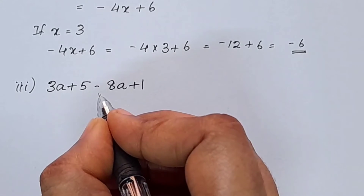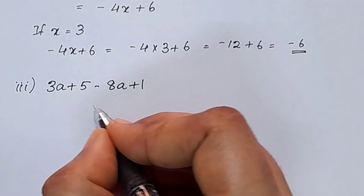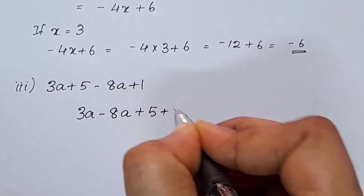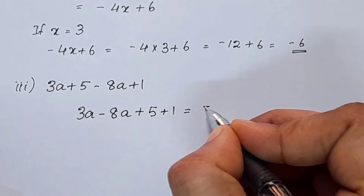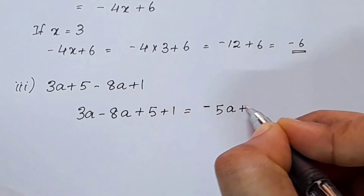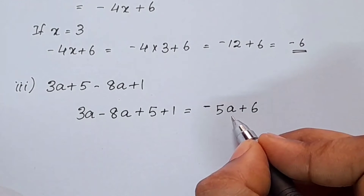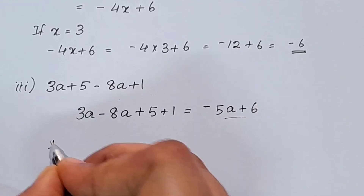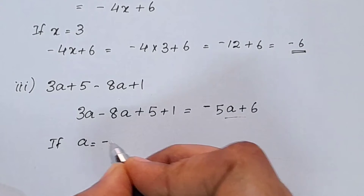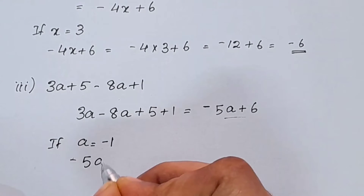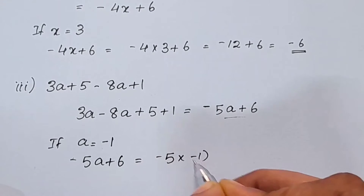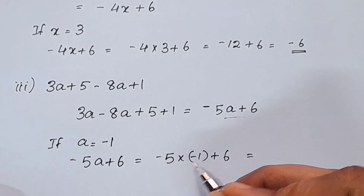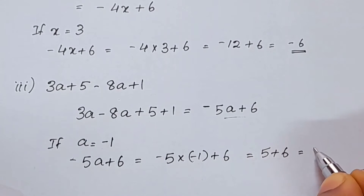Next question: 3a plus 5 minus 8a plus 1. We rearrange to collect like terms: 3a minus 8a plus 5 plus 1. That gives negative 5a plus 6. Now we substitute a equals negative 1: negative 5 into negative 1 plus 6 equals positive 5 plus 6, which equals 11.